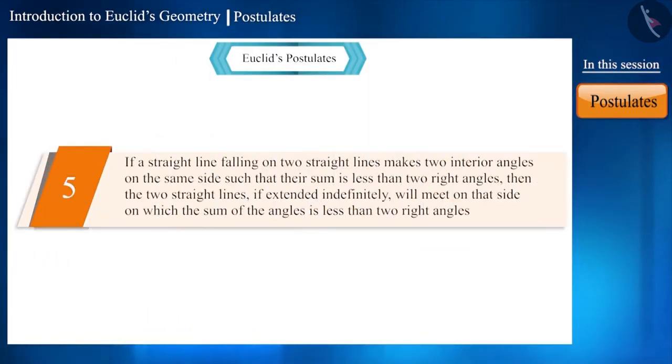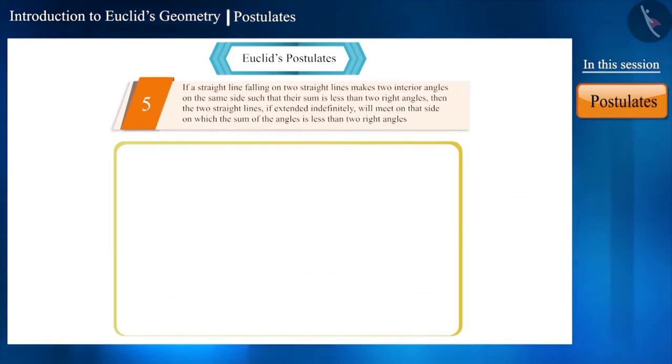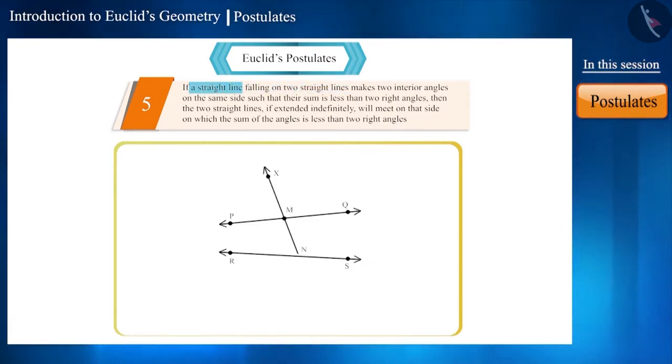Friends, we need to concentrate a little more to understand the next postulate. This postulate says that if there are two straight lines on a paper, and now if we draw a straight line intersecting both these lines, then if this straight line makes interior angles on its one side...